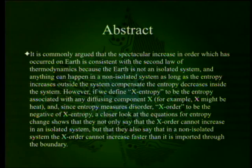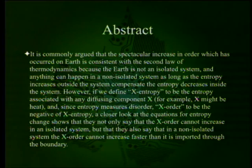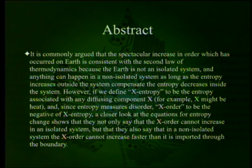The abstract goes: it is commonly argued that the spectacular increase in order which has occurred on Earth is consistent with the second law of thermodynamics, because the Earth is not an isolated system and anything can happen in a non-isolated system as long as the entropy increases outside the system compensate the entropy decreases inside the system. The two assertions there are actually true — it's just that the connection between them is somewhat insecure.